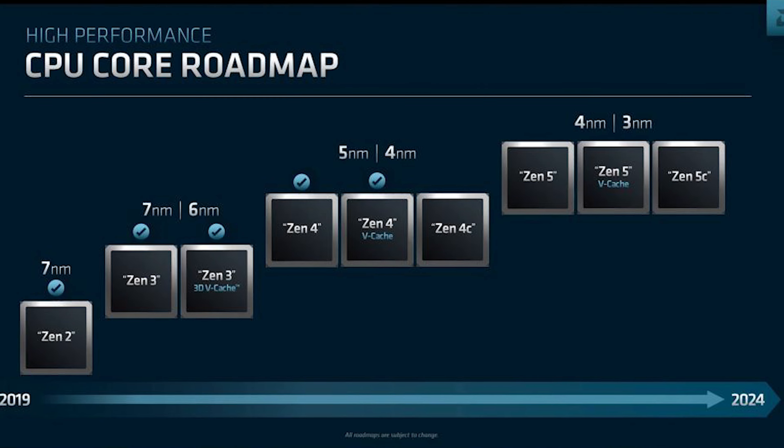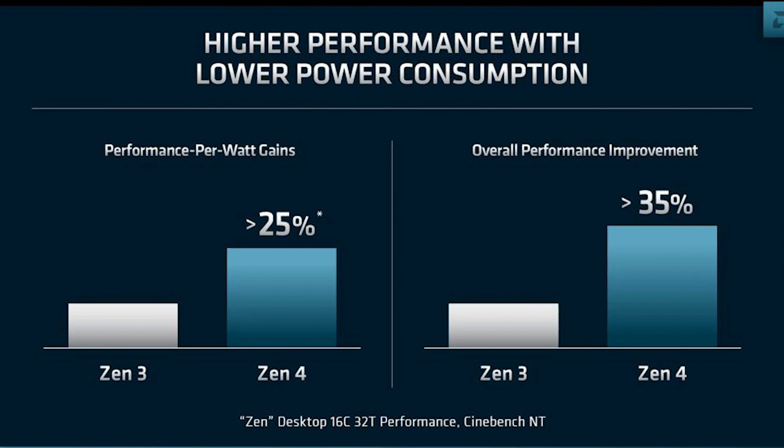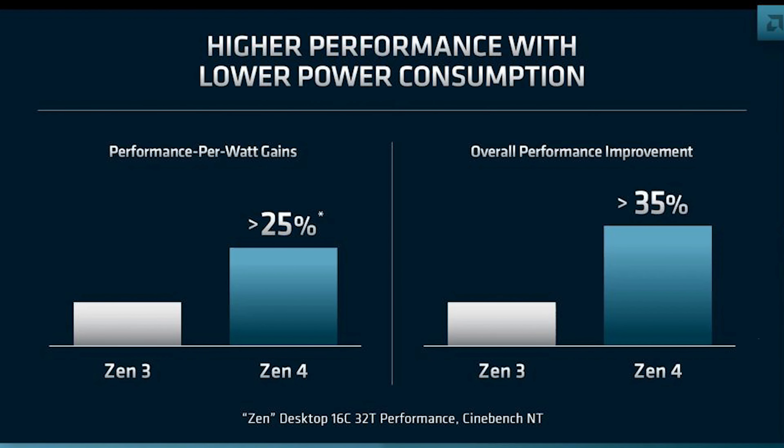On AMD's roadmap, the later Zen 4 models will include 3D cache. Now onto power consumption: Zen 4 achieves 25% more performance per watt, but also has a 35% overall performance improvement. To get that extra 10% performance, power draw does go up slightly, but this shouldn't be much of an issue. Additionally, the new generation of AMD CPUs will be on a 5nm process node rather than the 7nm process node of the previous generation.